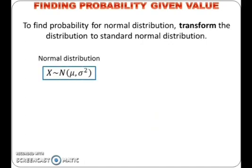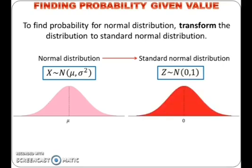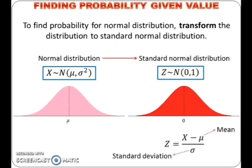To find probability for normal distribution, we must first transform the distribution to standard normal distribution. Standard normal distribution is a normal distribution with mean equals to zero and variance equals to one. Its graph is a bell-shaped graph with zero at the center. The letter z is used to represent the random variable having standard normal distribution, and z is given by x minus mu over sigma, where mu is the mean and sigma is the standard deviation.